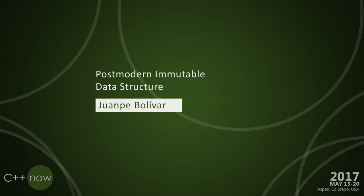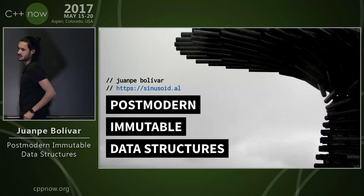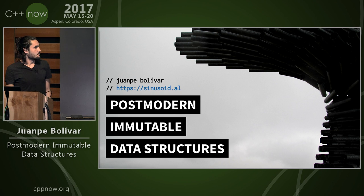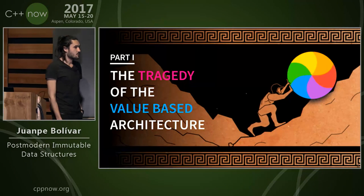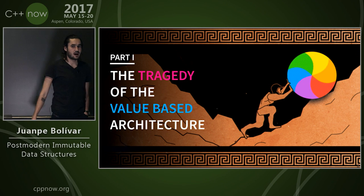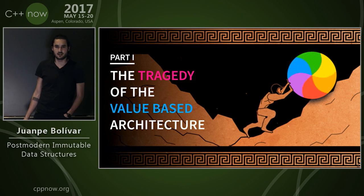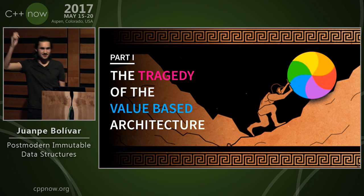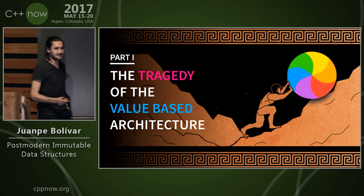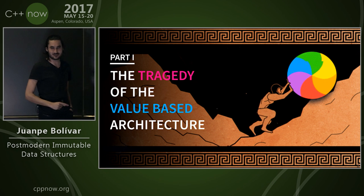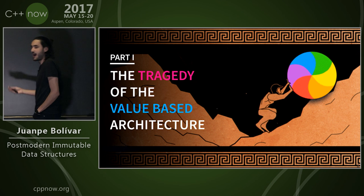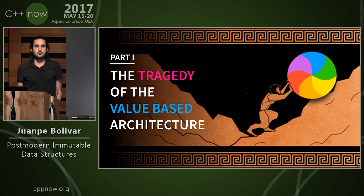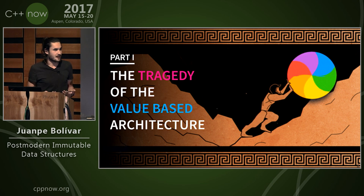Hello, welcome everyone. My name is Juanpe, and I'm a consultant based in Berlin. I'm going to talk today about immutable data structures. The reason immutable data structures are interesting is because of value semantics. Who here thinks value semantics are great? Almost everyone raised their hands. I think this confirms that the C++ community has developed a taste for value semantics.